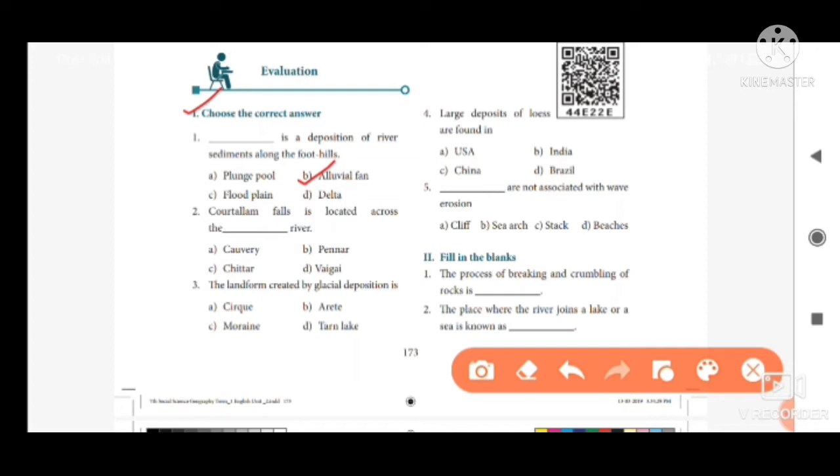Second one, Kutalam Falls is located across the dash river. Option A, Kaveri. Option B, Pennar. Option C, Chittar. Option D, Vaigai. The answer is option C, Chittar.